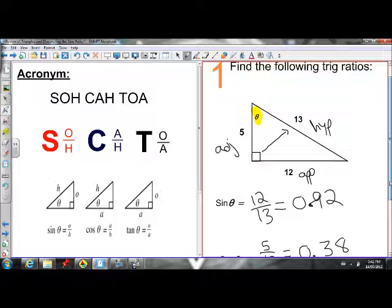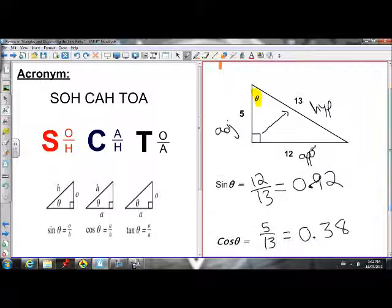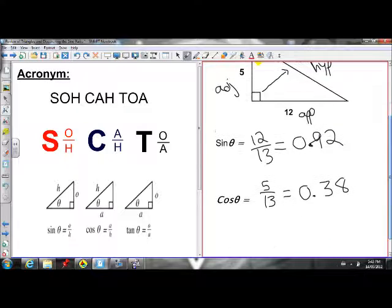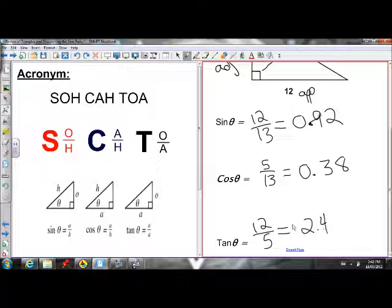Now I have to find tan. That's my last ratio. I know tan is opposite over adjacent. So opposite over adjacent is 12 over 5. That'll give me a nice round number of 2.4. 5 goes into 12, 2.4 times.